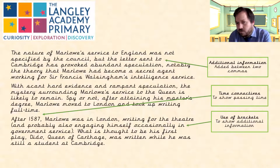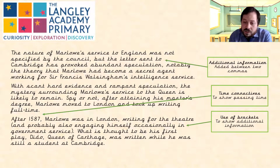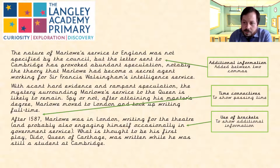This information in brackets: 'What is thought to be his first play, Dido, Queen of Carthage, was written while he was still a student at Cambridge.' You can see that's an additional piece of information between commas — 'Dido, Queen of Carthage' — demonstrating parenthesis again.